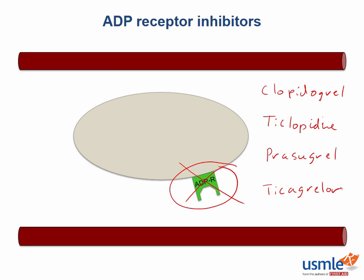The most common side effect of these medications is bleeding. For ticlopidine in particular, it can cause neutropenia, and due to this side effect, clopidogrel, prasugrel, and ticagrelor are often preferred.